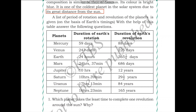Let us start by learning about the list of period of rotation and revolution of the planets. A list of period of rotation and revolution of the planets is given on the basis of Earth's timings. With the help of this table, answer the following questions. Here you have a list of the planets and the time they take to have the rotation and revolution.